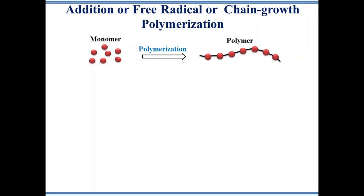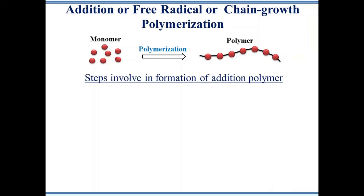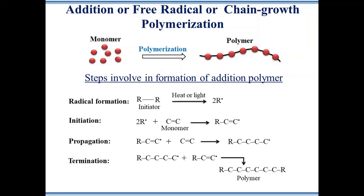Addition polymers form by successive addition of monomer molecules onto the reactive ends of a growing polymer. This process is similar to adding links onto a chain and therefore is called chain growth polymerization. Addition polymerization involves mainly three steps: initiation, propagation, and termination. In initiation, a small number of monomers react with an initiator molecule to form an active monomer or free radical. In the propagation step, the active monomers react with a large number of monomers and form a long chain free radical. Finally, in the termination step, two active chains react with each other to form a neutral polymer chain.